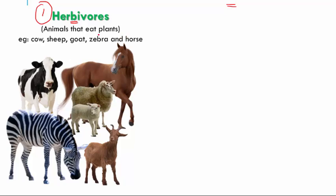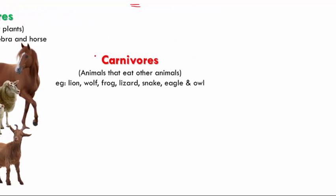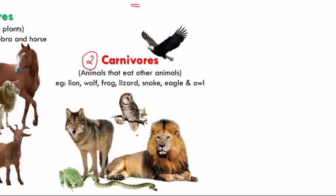Let's look at the next one. If there should be animals that eat plants, there will be animals that eat other animals. So let us look at what they are called. The second one is carnivores. Animals that eat other animals are called carnivores. For this, the examples would be lion, wolf, frog, snake, owl, and not to forget the eagle. All of these are carnivores and they will eat other animals.